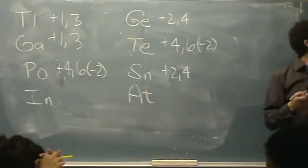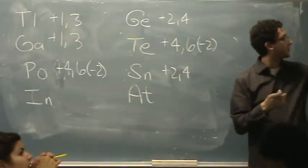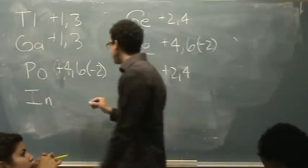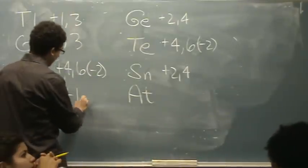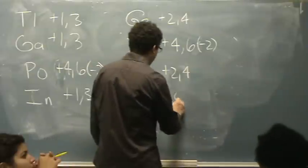oh, where is indium? Yeah, it's in the, what's that called, third column. It's +1 and +3. And Astatine is way over there. It's +5 and +7.